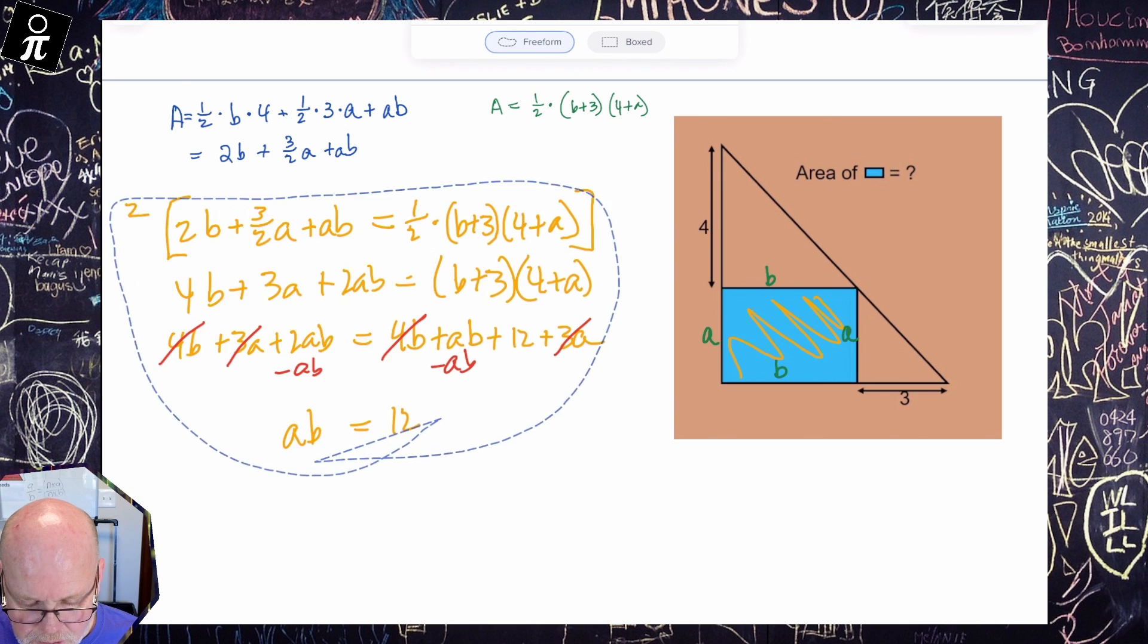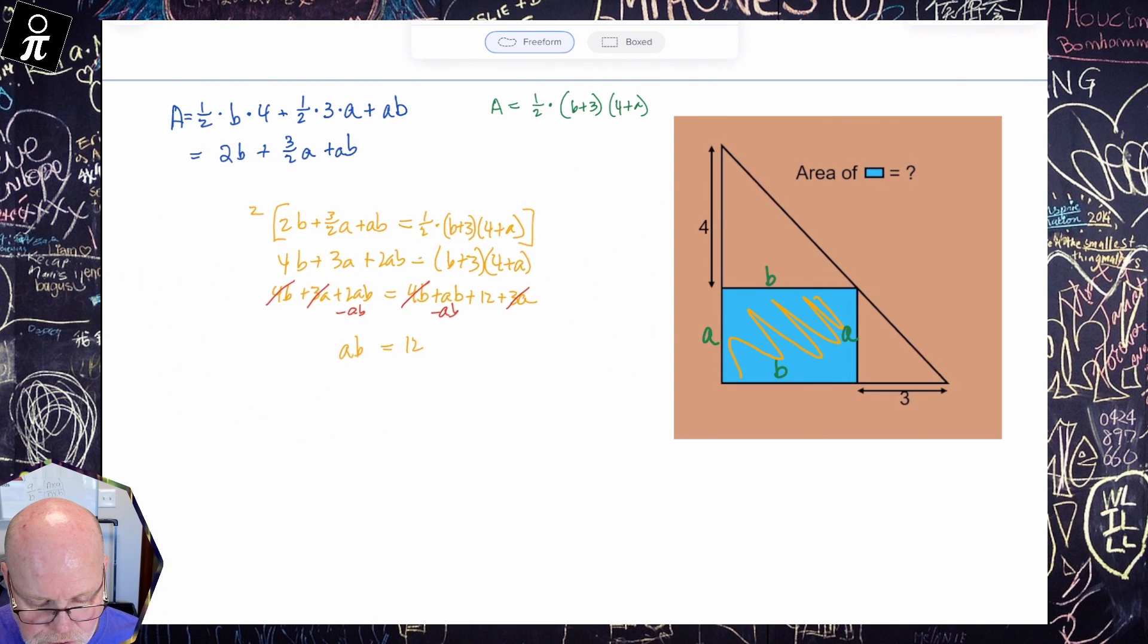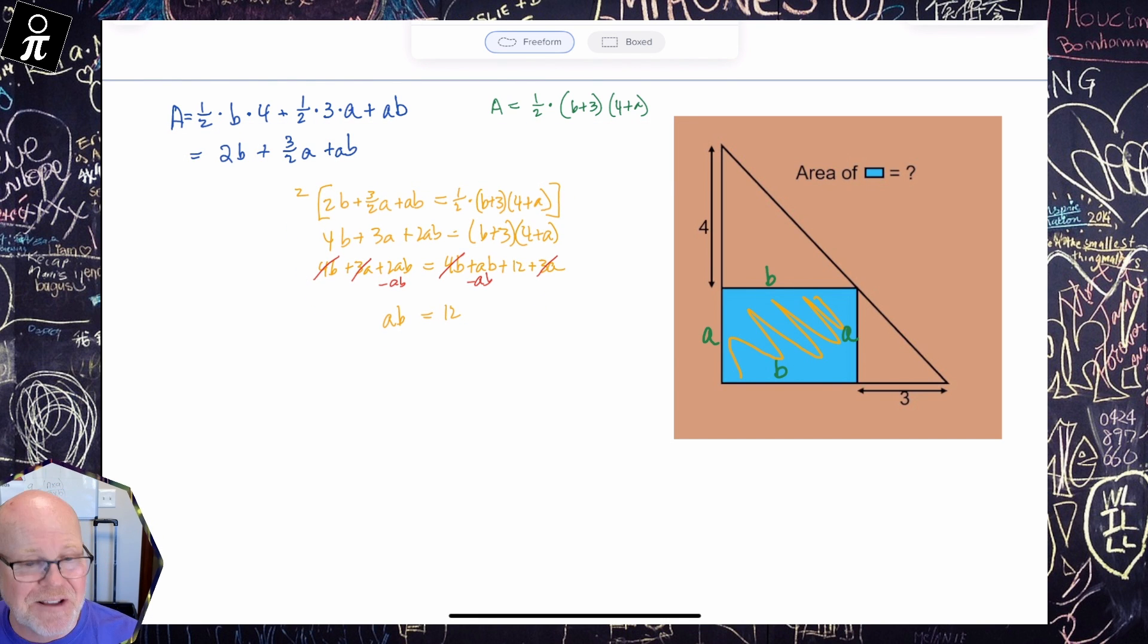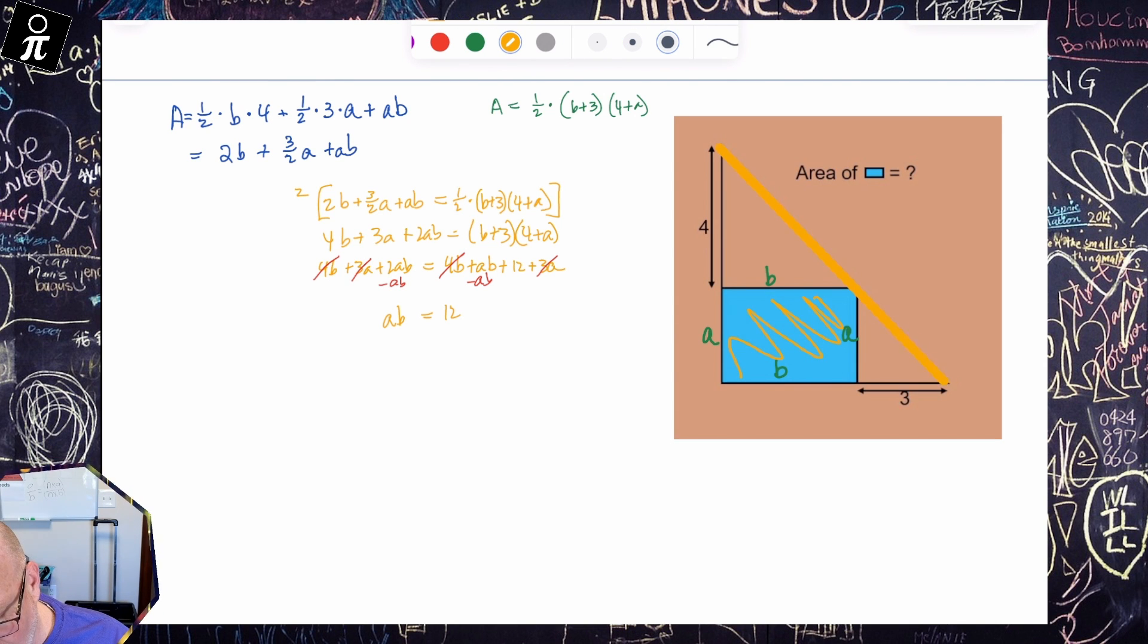Now that's the long way that I told you about. The short way is really, really elegant. Let me show you this. This is really kind of cool. Let's say we look at this line right here and now that line has a slope, doesn't it? And so this is really kind of cool.